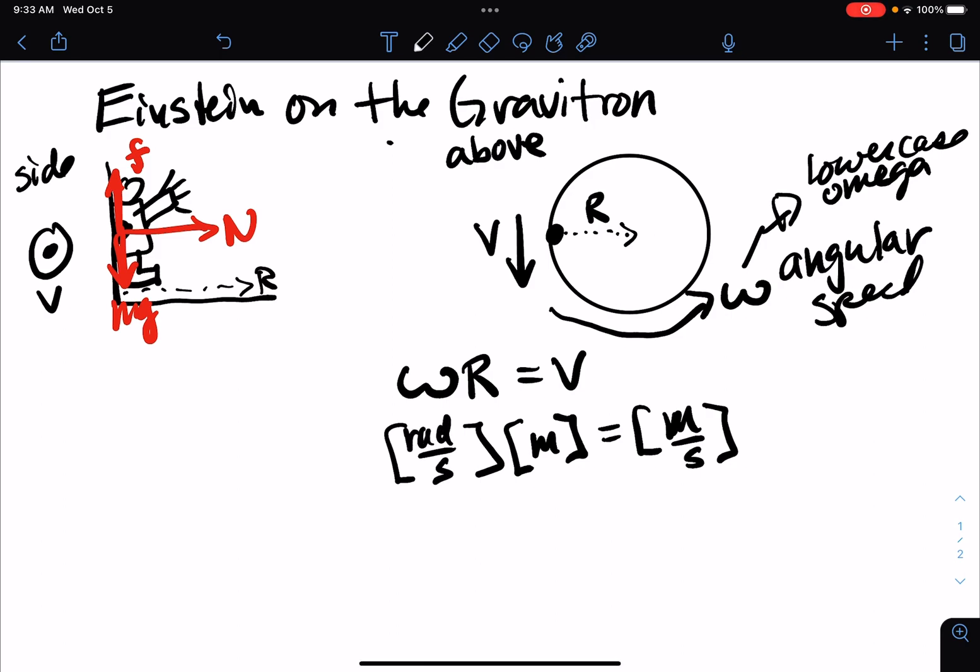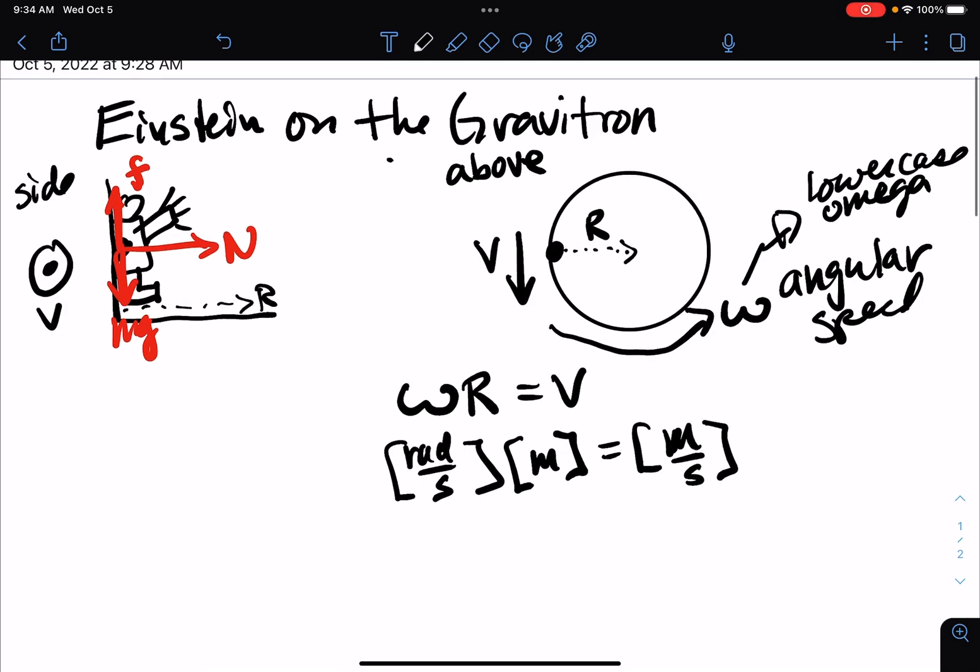Anytime we're measuring angles, we sometimes use degrees to measure angle. However, in the MKS units, the only angle measurement that's really allowed, if you're going to allow all of the different equations to work and the different units to work together, the only angle measure we're actually ever going to use is radian.